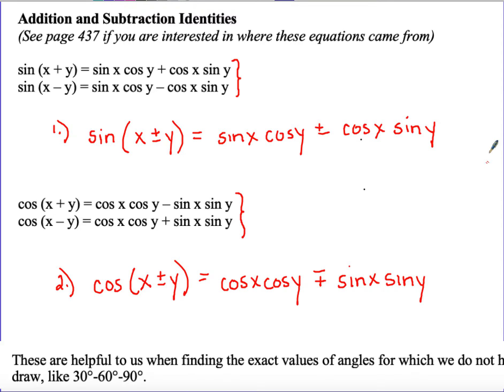We'll get to the tangent in just a little bit. These identities are going to be helpful to find the exact values of angles when we don't have a special triangle like a 30-60-90 that we can draw.